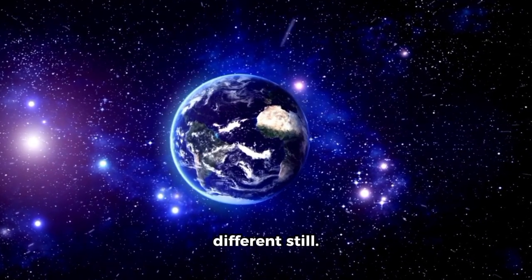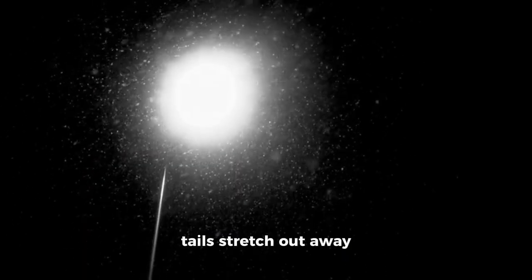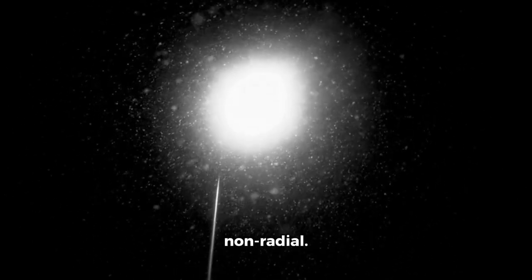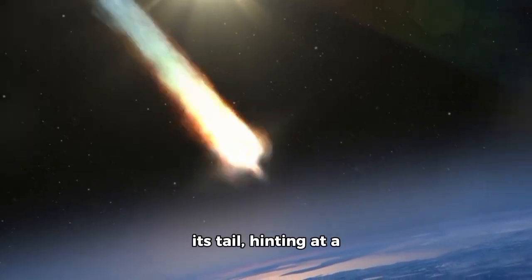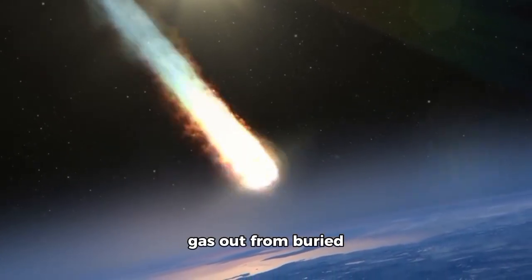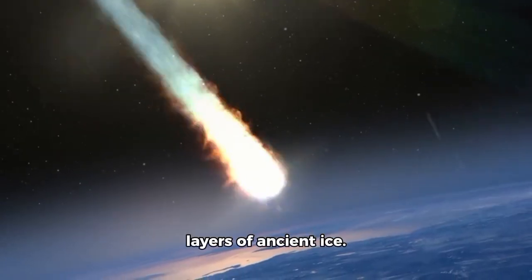However, its tail was different still. Unlike most comets, whose tails stretch out away from the sun due to solar radiation pressure, 3I's dust ejection was non-radial. It was misaligned with its tail, hinting at a chaotic surface or active vents shooting gas out from buried layers of ancient ice.